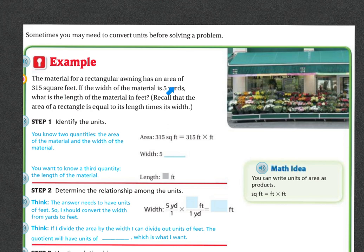So first we're going to have to identify the units. We've got feet and yards. You knew two quantities: the area of material and the width of the material. The area is 315 square feet. So 315 square feet is 315 feet times we don't know. The width, according to the problem, is five yards right here. We don't know the length, but we do need to convert this yards into feet.